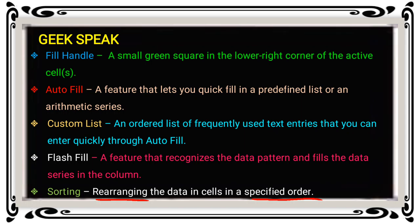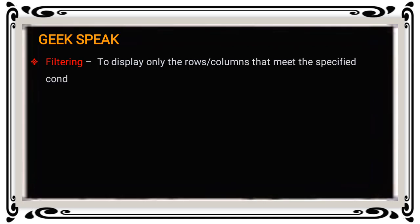Sorting means rearranging the data in a specified order. For example, you can arrange data in ascending or descending order. Numbers arranged smallest to largest, or text values arranged A to Z, is ascending order. Descending order is largest to smallest number and Z to A for alphabets.